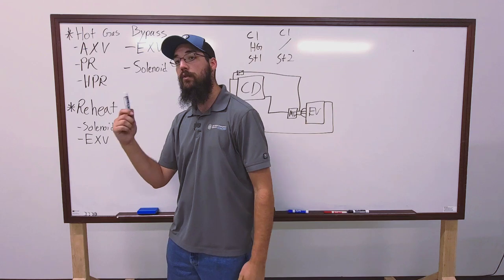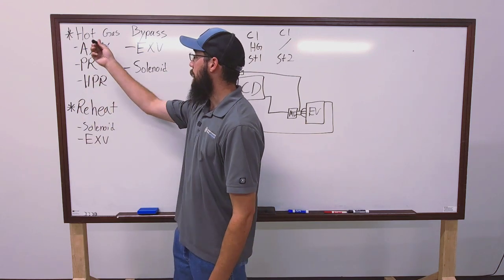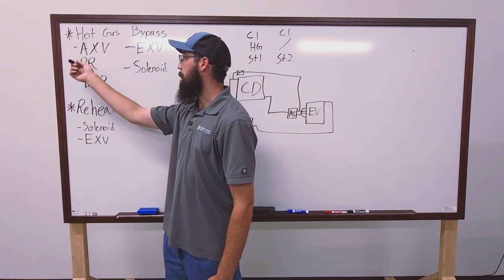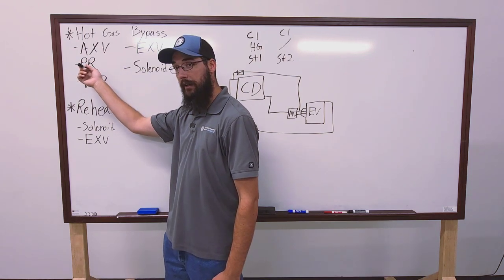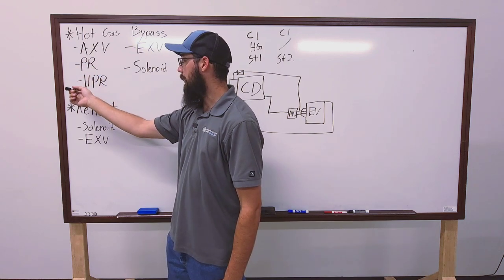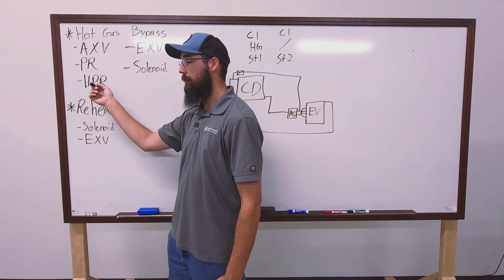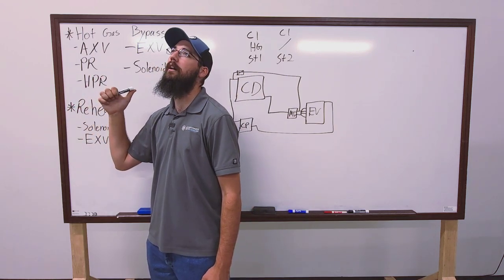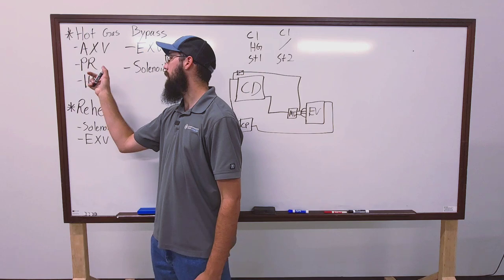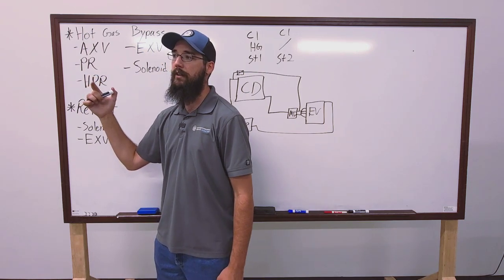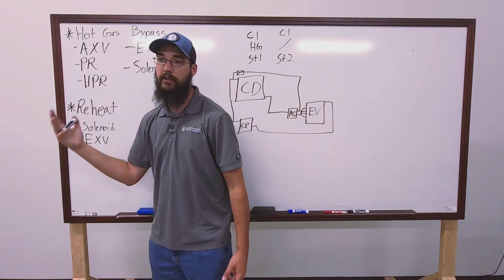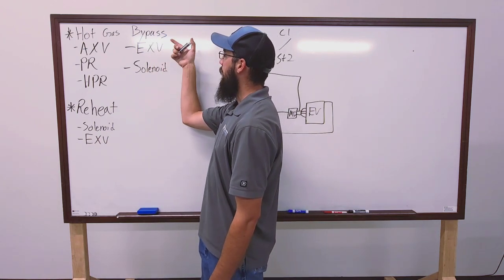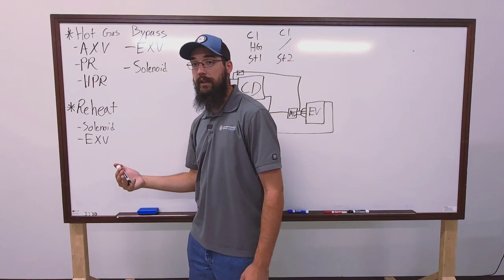Is the bypass typically just open-closed, like a solenoid, or is it more so like a step? So, that takes us into this list. There's several different ways it can be done. You have an AXV, which is an automatic expansion valve. You have a PR, which is a pressure regulator. An HPR, which is a head pressure regulator, also known as a head pressure control valve. I know them as HPRs. That's what I was trained on when I did low temp. And then you can have an actual EXV.